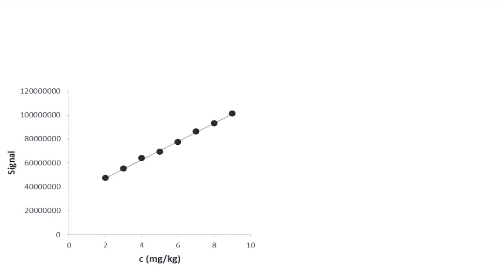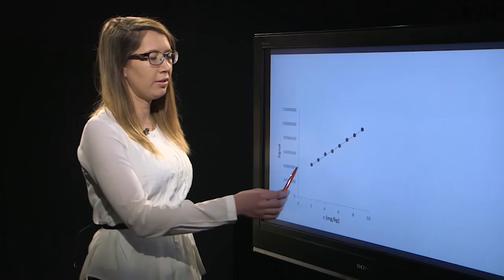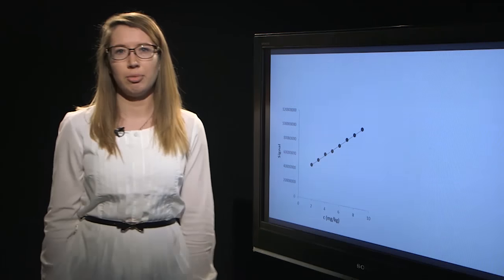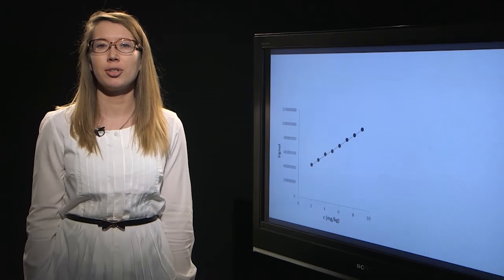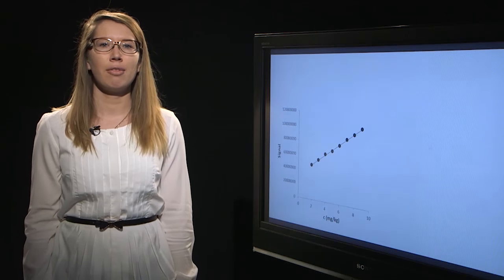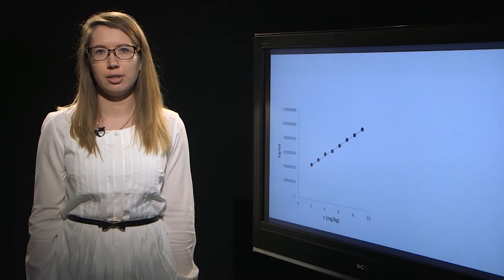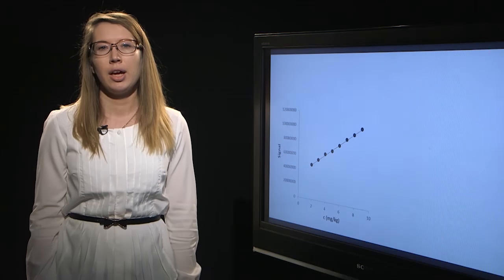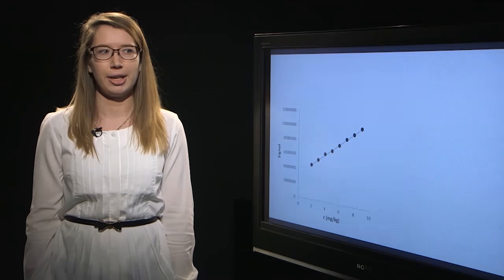Therefore, when using the visual evaluation of linearity, we actually evaluate the random distribution of residuals along the calibration graph. We also evaluate the homoscedasticity. That means that the residuals have to have approximately the same magnitude over the concentration range of interest. Or in other words, the standard deviation of signal should be constant over the observed concentration range.